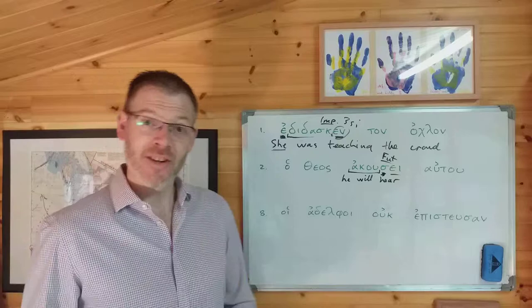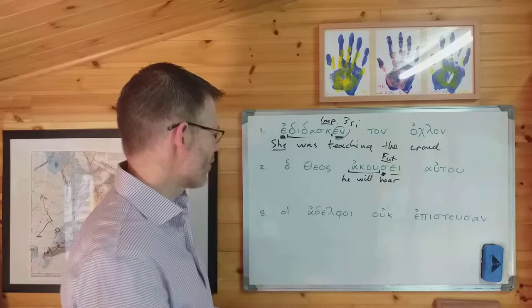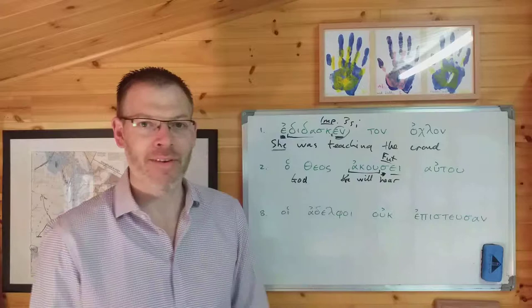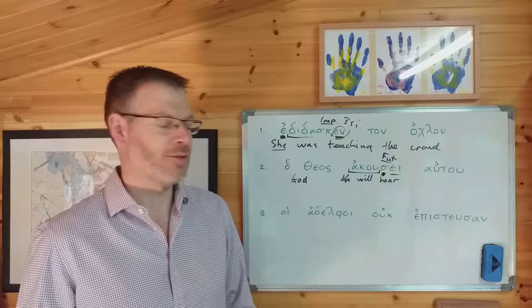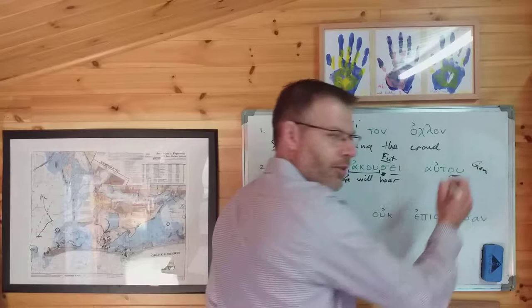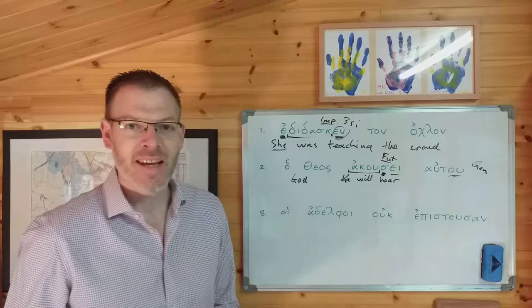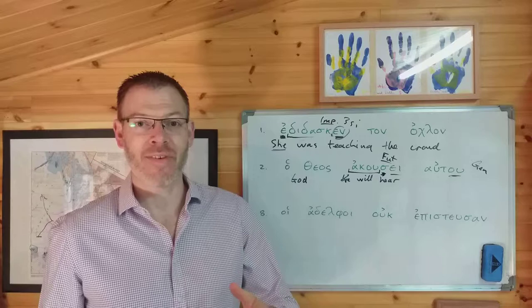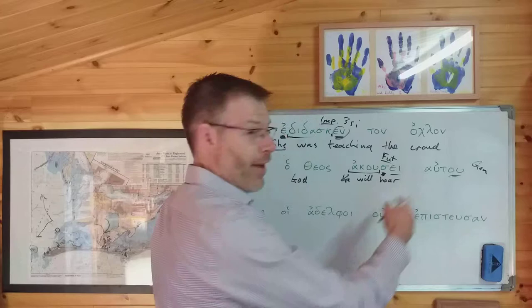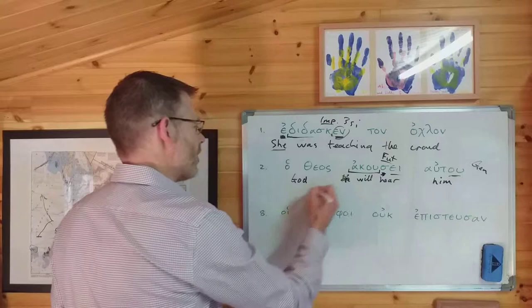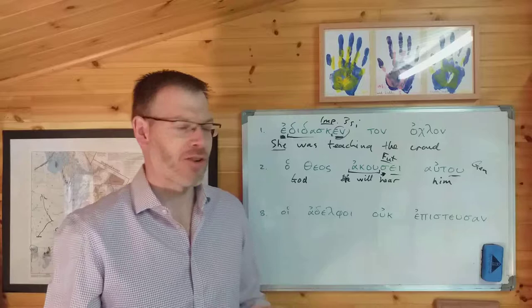Third person singular means it could have a separately lexicalised subject, and of course it does. Ho theos is in the nominative, so 'God will hear.' And what else is there? Well, that's a little bit of a puzzle, because you might be expecting an object noun in the accusative. What you've got here is autou, which is the third person pronoun — him — but in the genitive singular. The verb akuo takes an object in the accusative if it's the thing heard, genitive if it's the person heard. So this means 'God will hear him.'